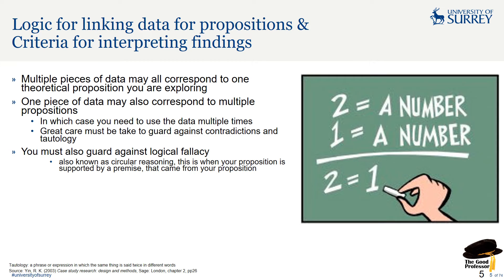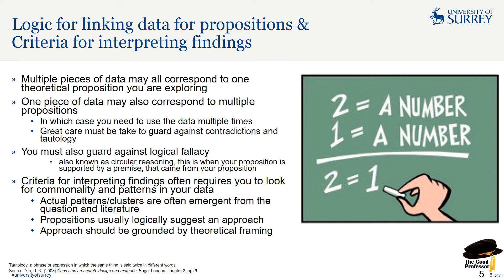You've also got to guard against something called logical fallacy or circular reasoning. An example: two is a number, one is a number, so two equals one because they're both numbers. You've got to be really careful about this sort of thing. The criteria for interpreting findings often requires you to look for commonality and patterns in your data. Those patterns are often emergent from the question or the literature. Propositions usually logically suggest the approach you might take, and the approach really needs to be grounded in theoretical framing. Your framing from theory should help guide the way you interpret your findings.